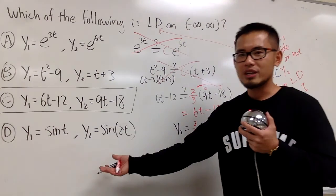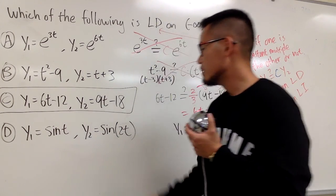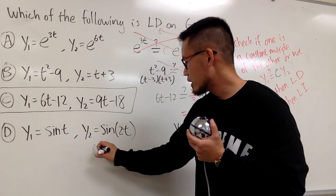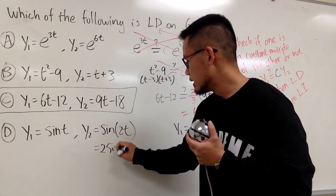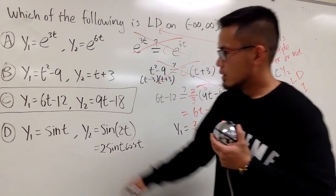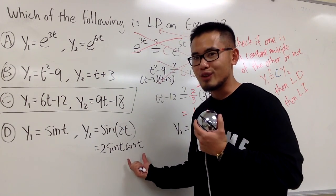And, of course, you can check the last one. I have sine t. This is sine of 2t. Hmm, this right here, okay, if you want to use double angle formula, this is going to be 2 sine t, cosine t. Okay, I have sine t match, but on the right-hand side, I have this additional function.